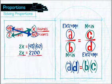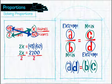Next, divide both sides of the equation by two to get X by itself. X equals 1,350.